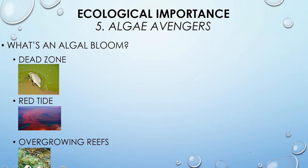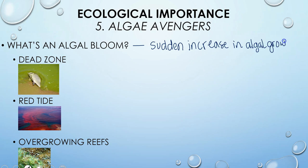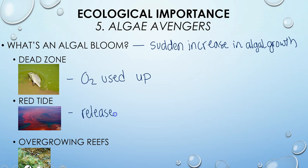Protists can also cause algal blooms, which is a sudden increase in algal growth usually due to increased nutrients. This causes things like dead zones where oxygen has been used up, ending up killing lots of other animals. It can cause red tides, where the algae release toxins to kill other competitors. And sometimes the algae can even overgrow coral reefs and end up killing the coral.